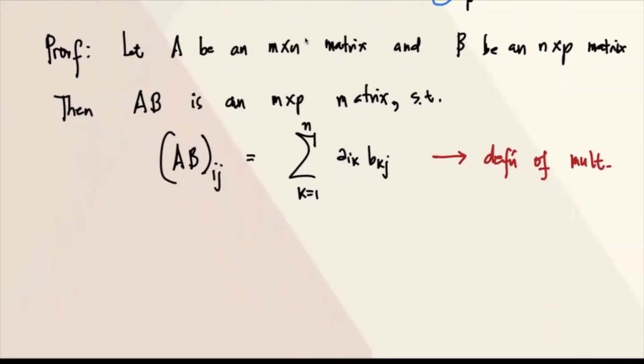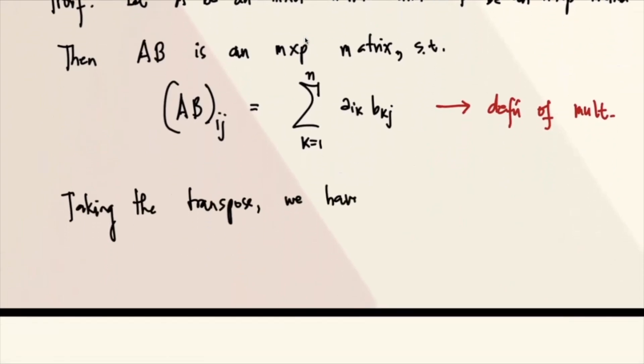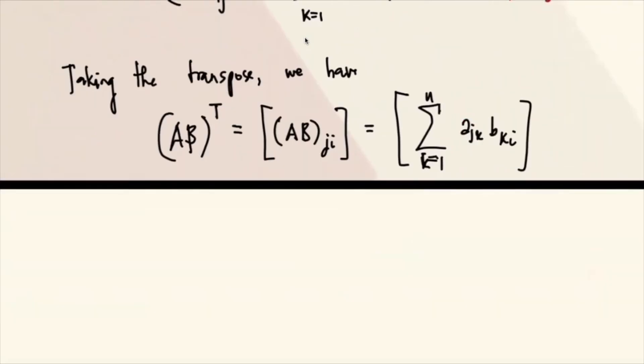Now, I wanna take the transpose. So taking the transpose, we have, okay. Anong mangyayari? This is A, B, transpose. That's the same as if you take the transpose of this. And so this is the same as, binaliktad kasi natin. So magiging A, J, K, B, K, I, K from 1 to N. Okay. So let's label this as star.